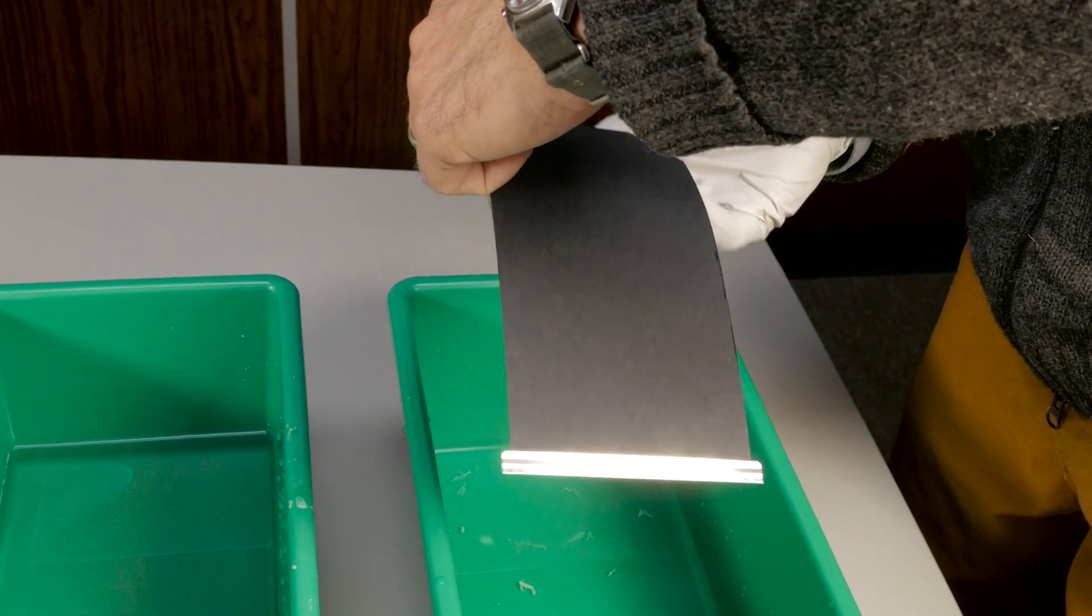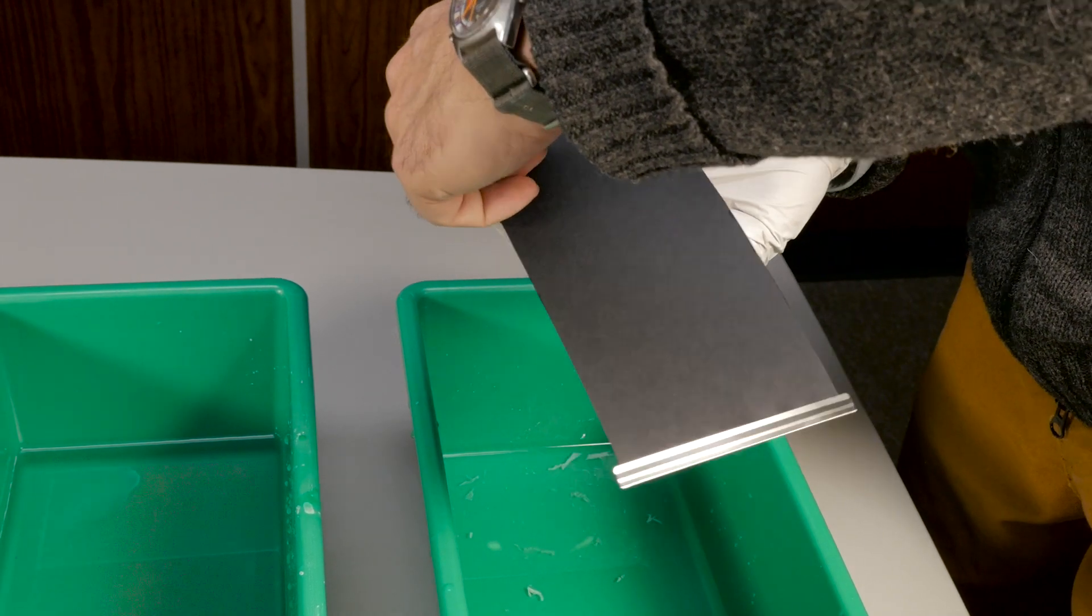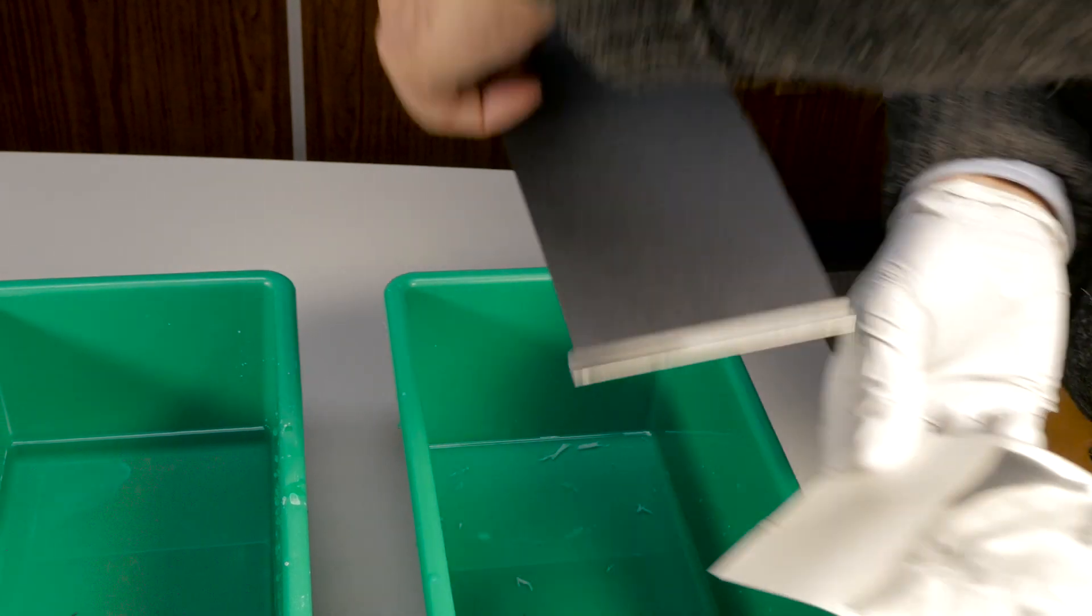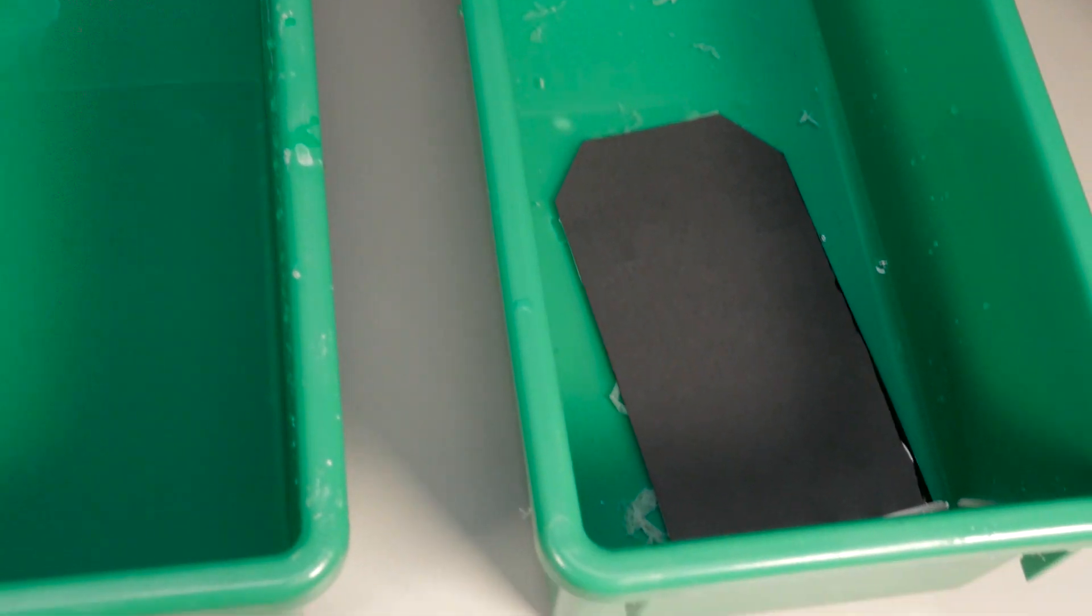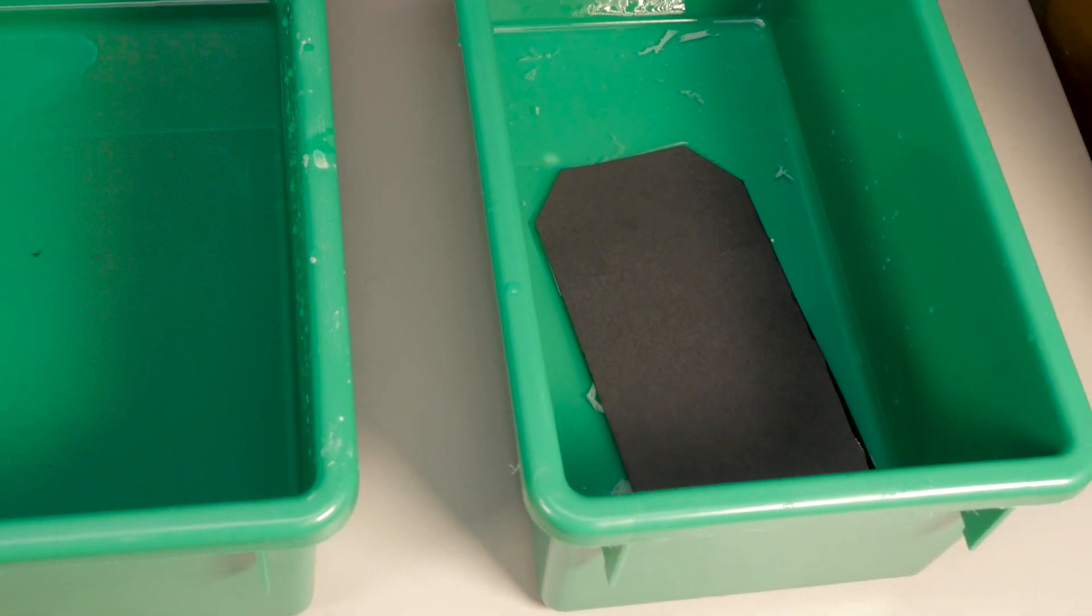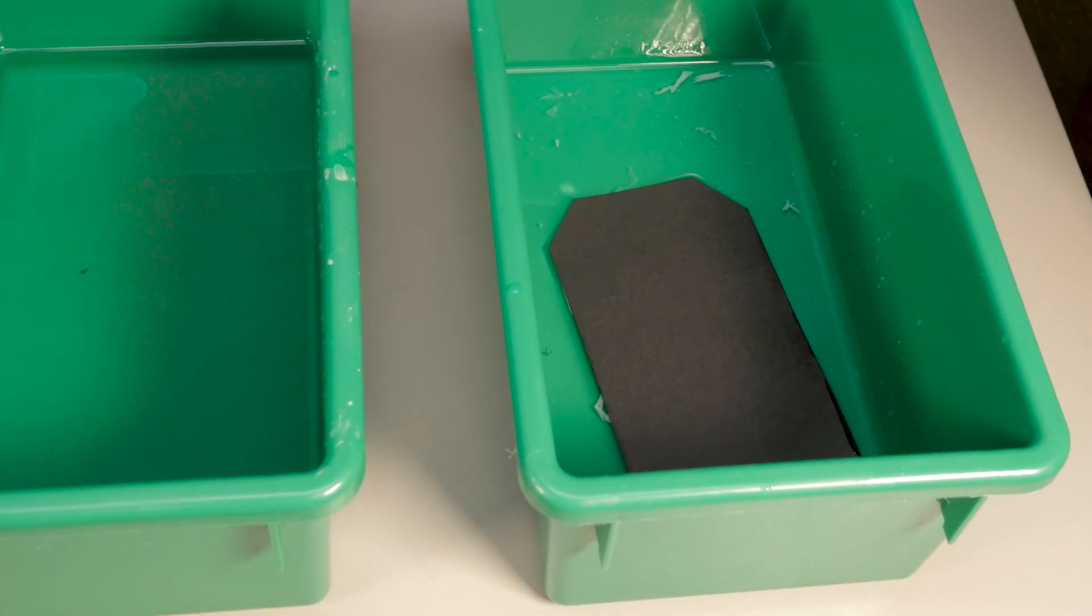When I peel the print off the negative I'm going to keep the negative facing down and immediately drop the negative and the tongue assembly into the fixer. It's very important to get that negative face down into the fixer right away.